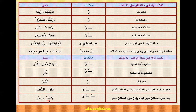اسی طرح 'یُسْر' میں دیکھیں — Ra کو stop کرنے کی وجہ سے سکون دیں گے، اس سے پہلے سین ہے جو ساکن ہے (یا نہیں)، اور اس سے بھی پہلے ضمہ ہے، تو Ra موٹا پڑھیں گے: 'یُسْر' کریں گے، 'یُسِر' نہیں کریں گے۔